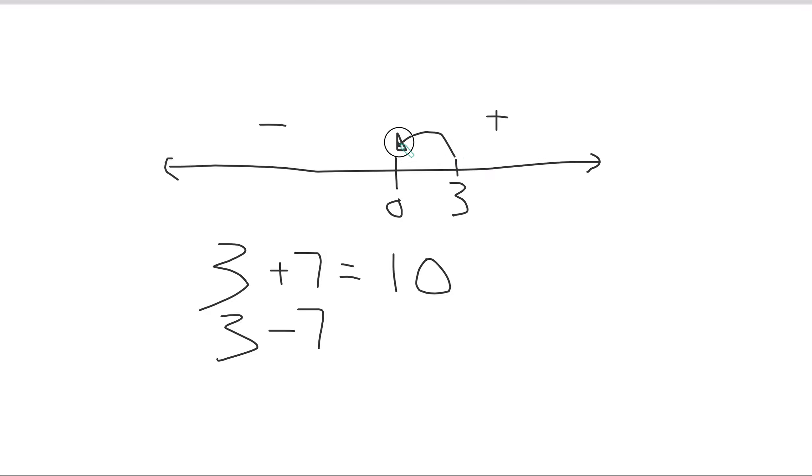Exactly, you're subtracting another 4, so now you're at negative 4. So 3 - 7: subtract 3 to get to zero, right? And then subtract 4 more. So now you've subtracted 7 total. You're at -4.